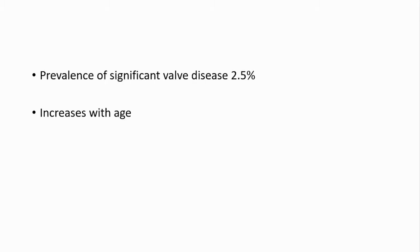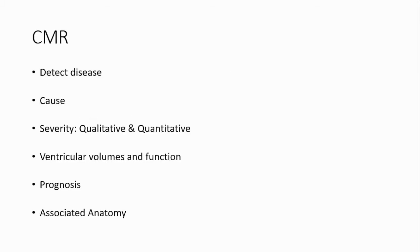Available data from the western world shows that the prevalence of significant valve disease is about 2.5 percent, and it increases with age. Cardiac MRI not only detects valvular heart disease and which valve is affected, but further characterizes whether the lesion is stenotic, regurgitant, or mixed, and helps determine its severity and possible cause. MRI is also the gold standard for ventricular volumes and function assessment, and has the added advantage of picking up ancillary findings and helping in prognostication.